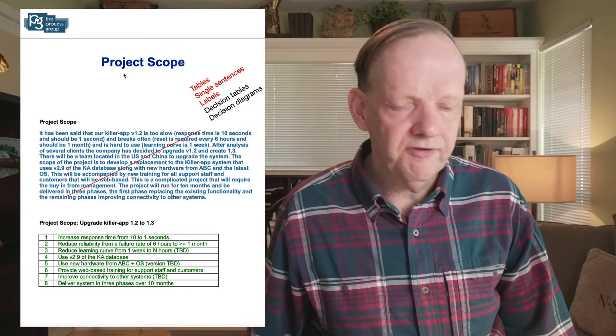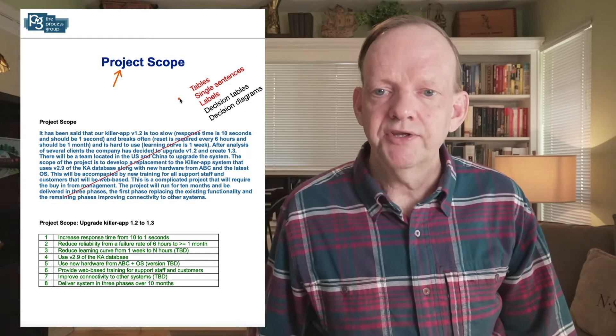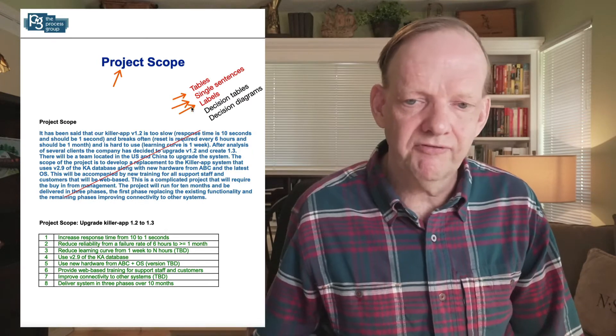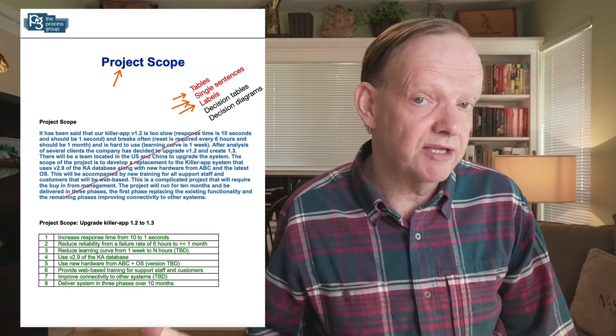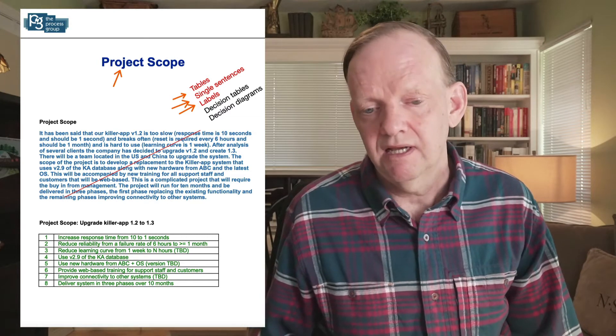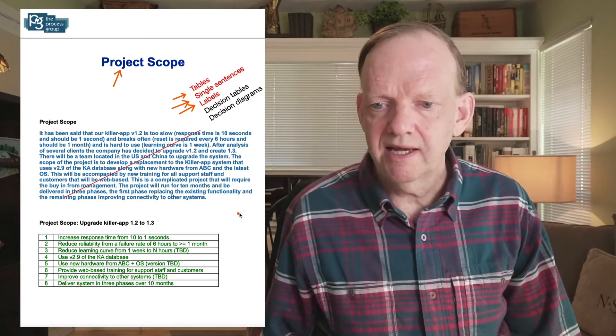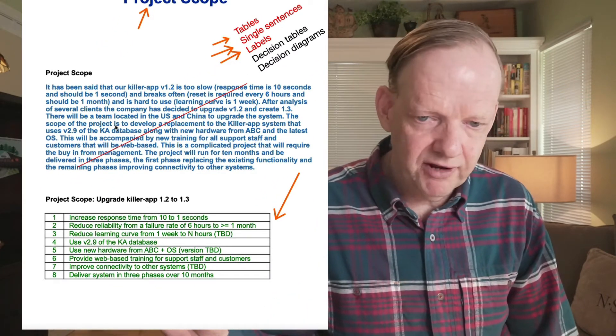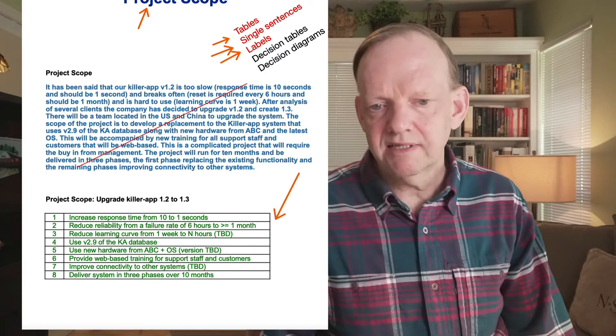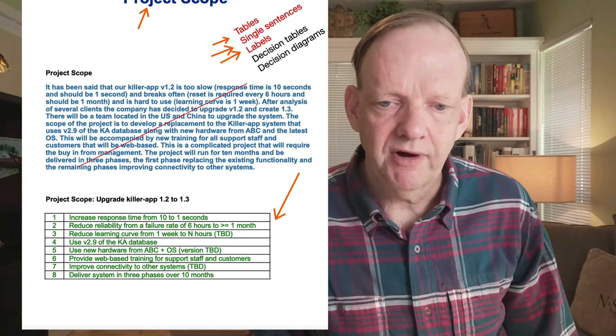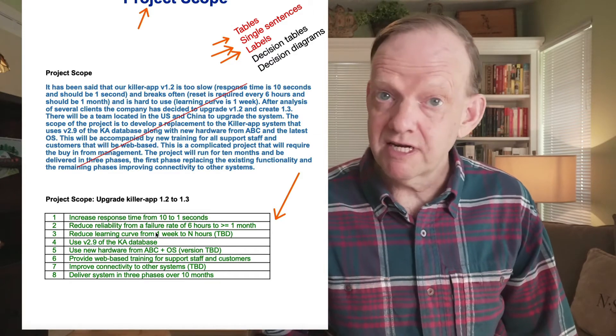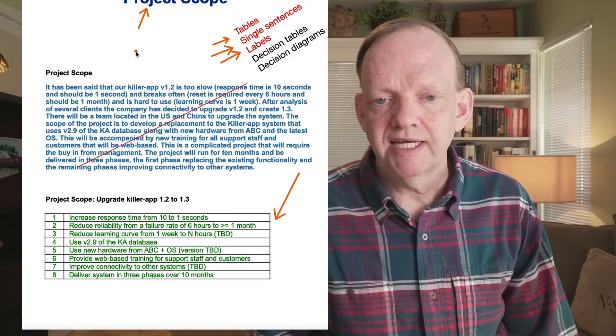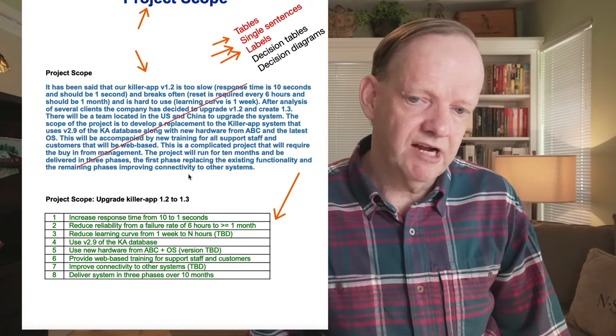So let's take our first example of a project scope and we're going to use the concepts of tables, single sentences and labels to take this paragraph and make it a bit more understandable and even find some of the mistakes in it later on too. So we're going to take this here and convert it into a table format. If we read it carefully and then eliminate the fluff, we end up with eight key concepts for our scope.